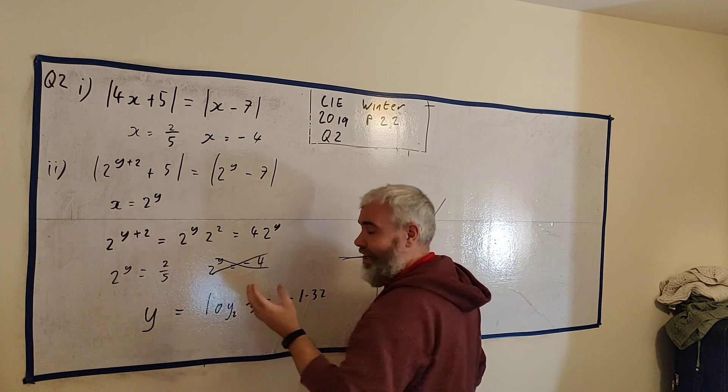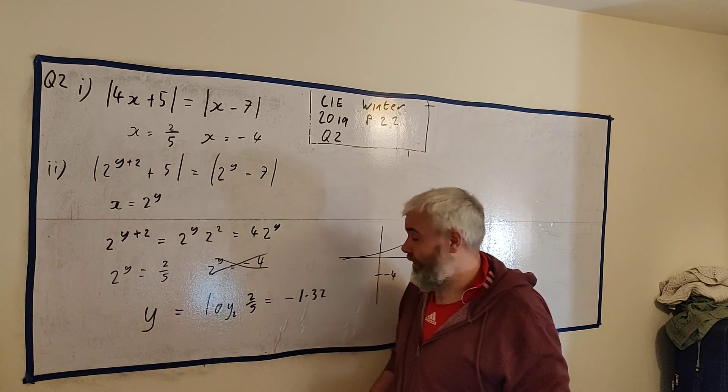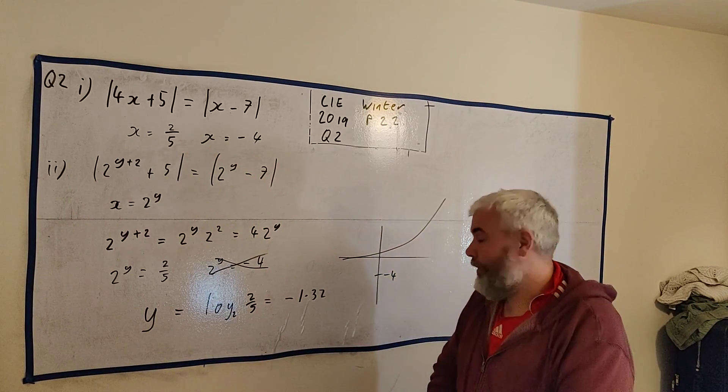2 to the power of minus 1 is a half. 2 to the minus 2 is a quarter. This number is somewhere in between that. So that's why we get 1.32.